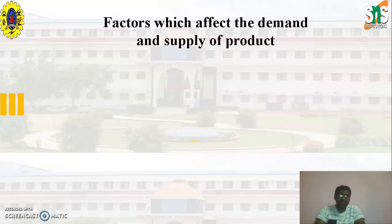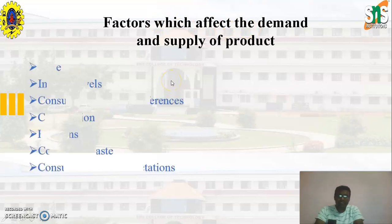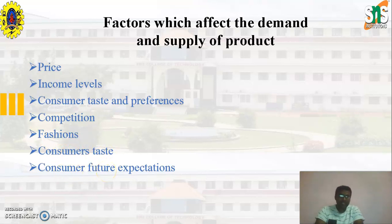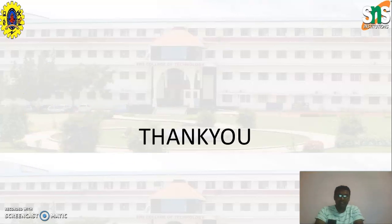Next, we are going to discuss factors which affect the demand and supply of the product. Some of these are price, income levels, consumer preferences, competition, consumer taste, and consumers' future expectations. These are some of the key points regarding demand vs. supply. Thank you.